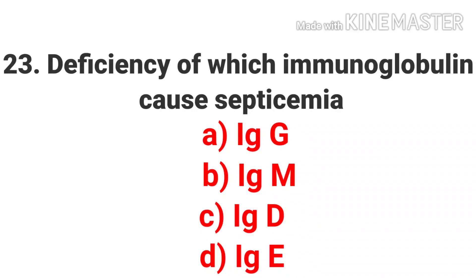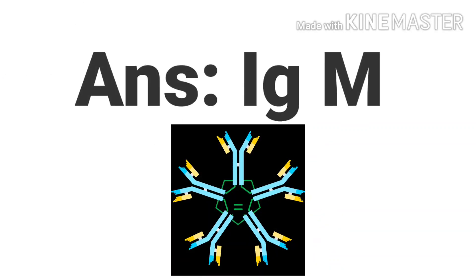The twenty-third question is: deficiency of which immunoglobulin causes septicemia? The options are IgG, IgM, IgD, and IgE. The answer is IgM.